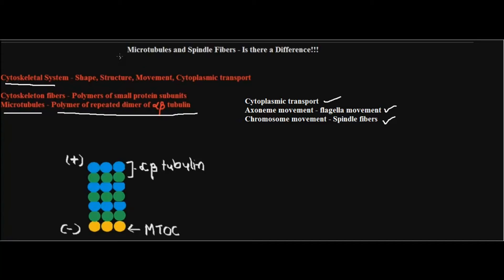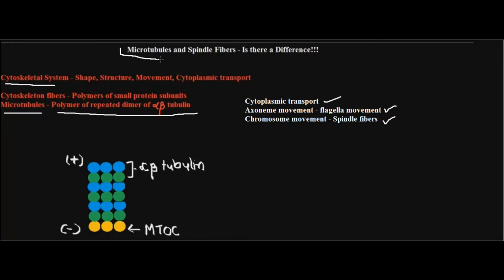Microtubule is part of our cytoskeletal system. The cytoskeletal system gives shape and structure to the cell, helps in the movement of the cell, and also in cytoplasmic transport. Specifically for microtubules, the functions are cytoplasmic transport, axoneme movement — that is flagellar movement — and chromosome movement, which is the spindle fiber formation.